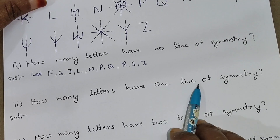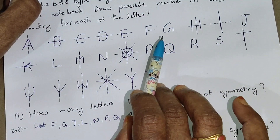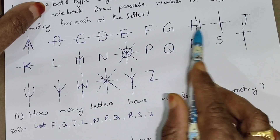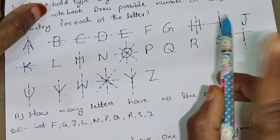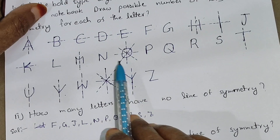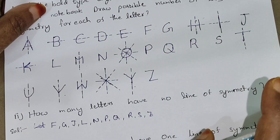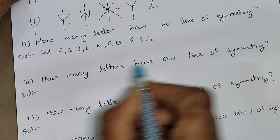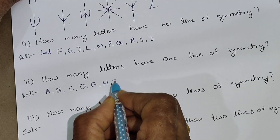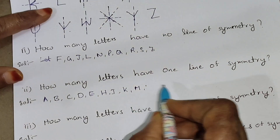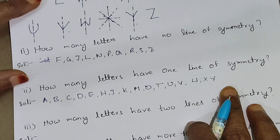Next question: how many letters have one line of symmetry? The letters with one line symmetry are: A, B, C, D, E, H, I, K, M, O, T, U, V, W, X, Y. These letters all have one symmetry line.